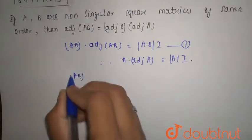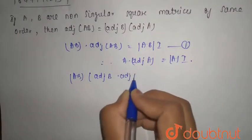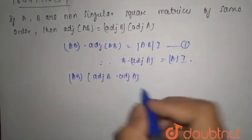So you can say that AB, here you can write adjoint of B into adjoint of A because this can be written as this.